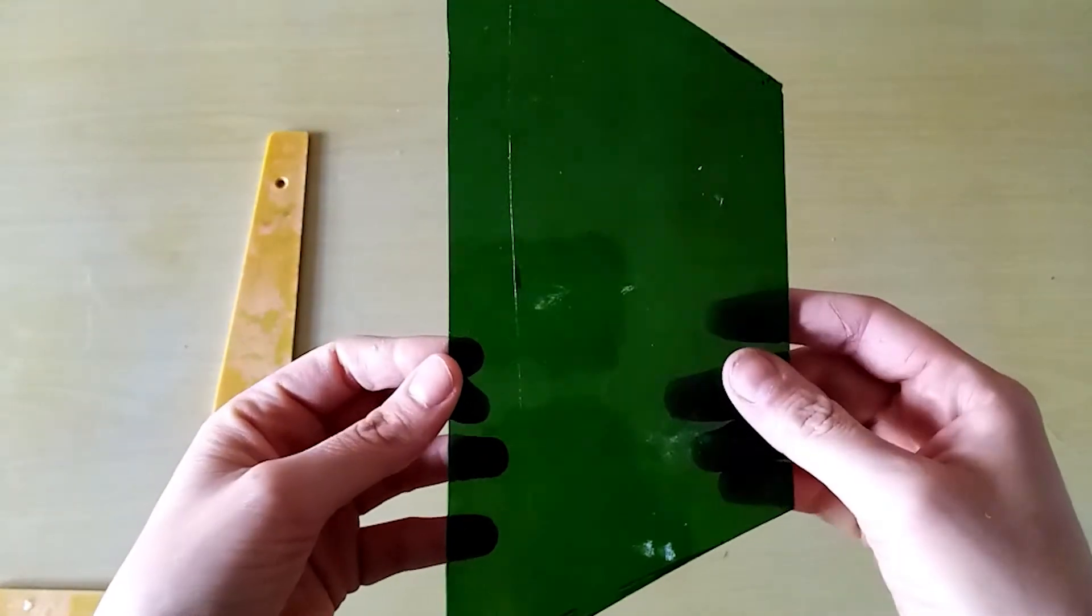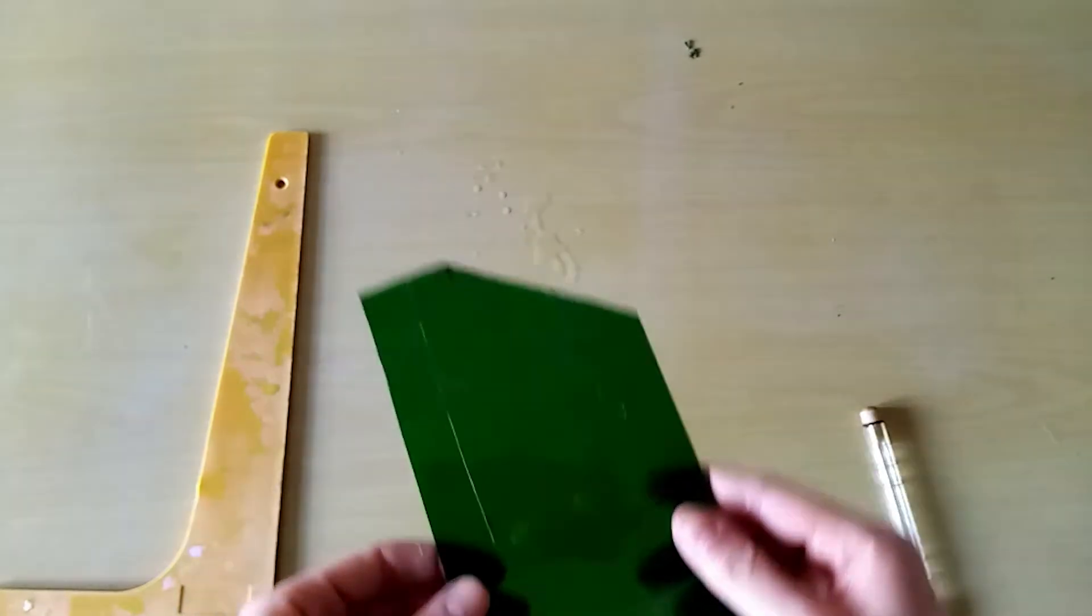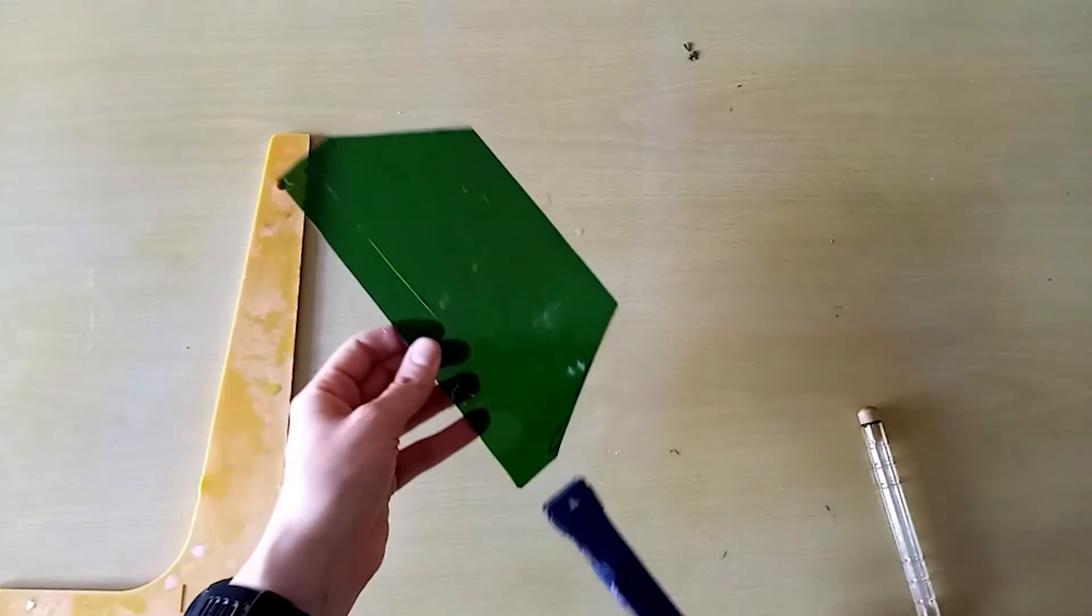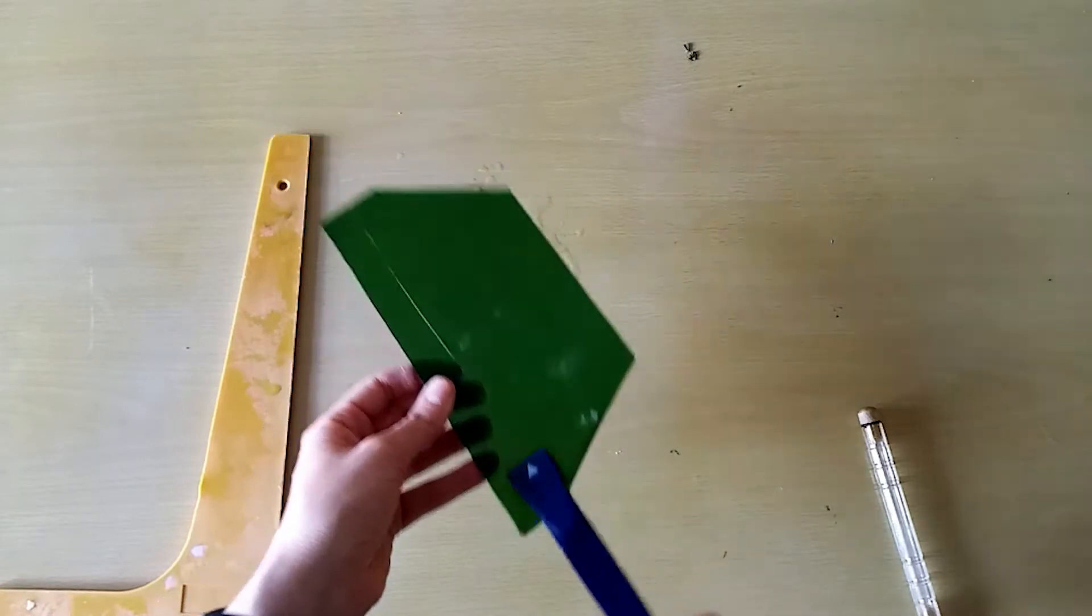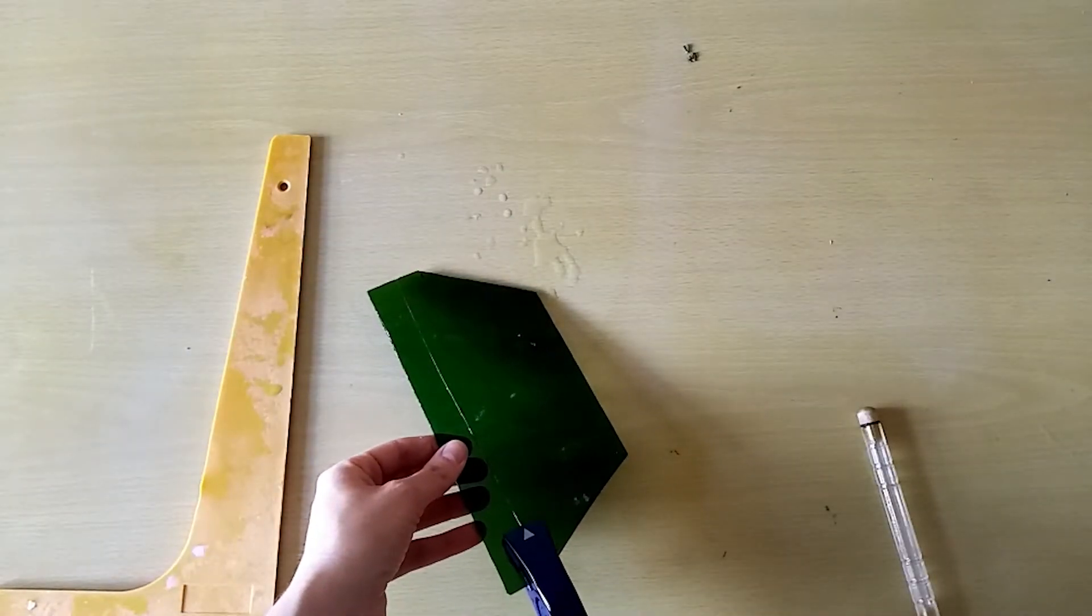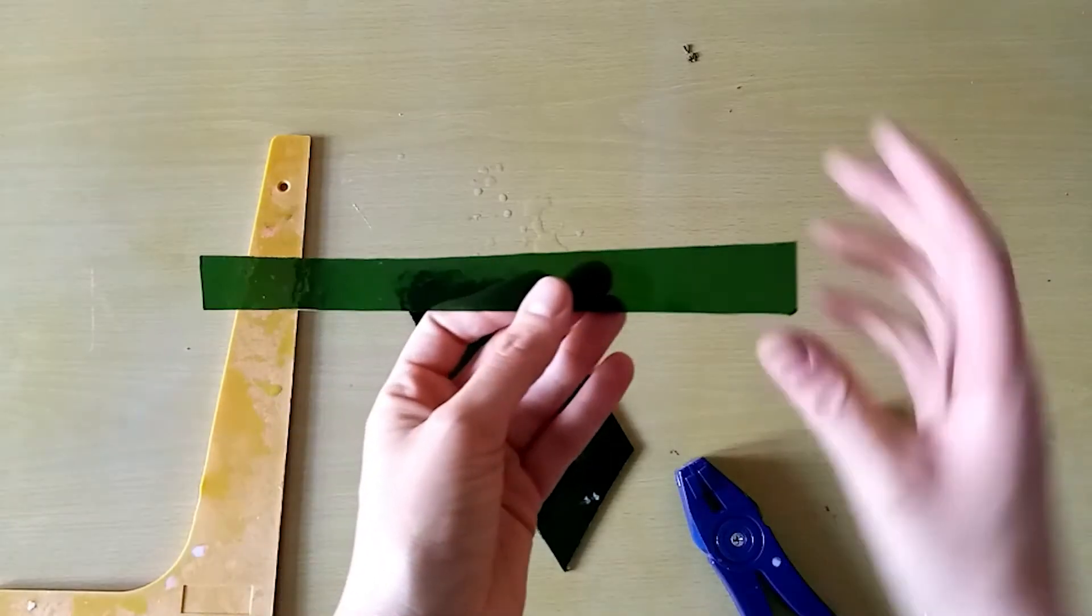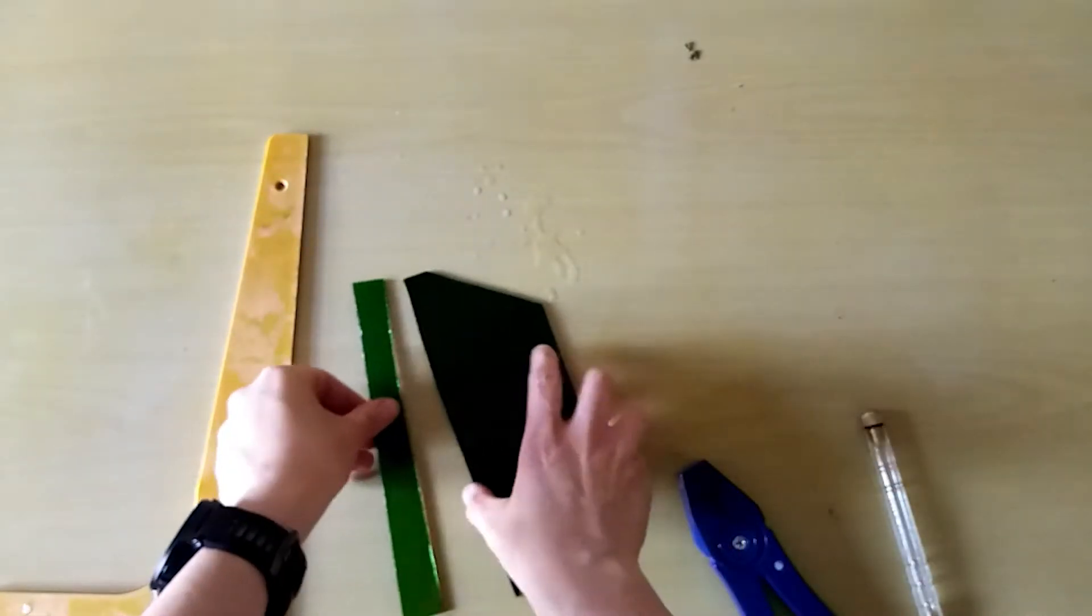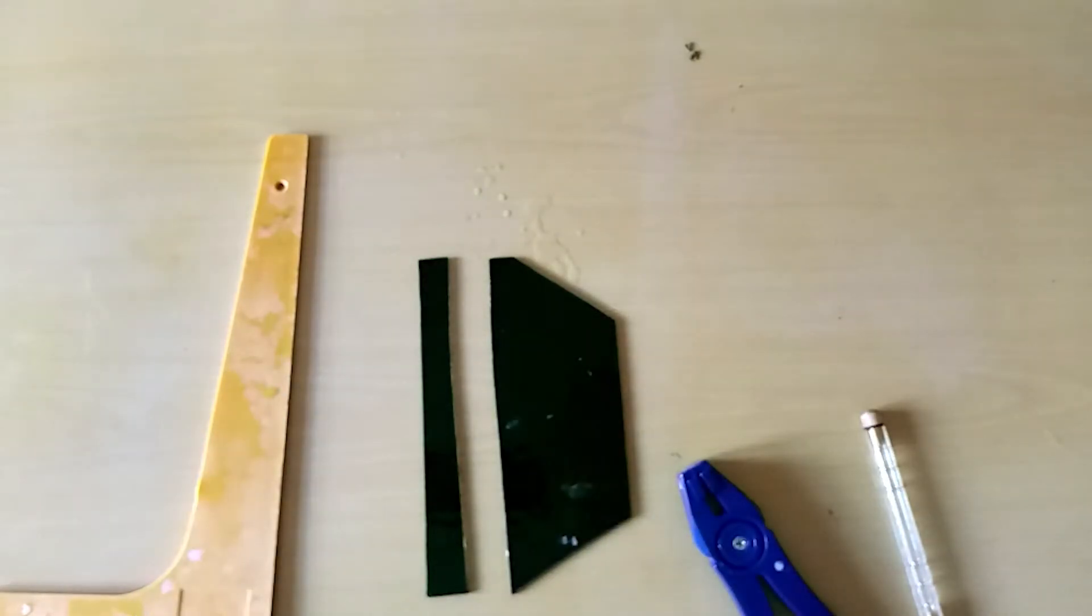Once you've made the score mark all the way down your piece you'll then get your running pliers. So where the arrow is on the top of the running pliers wants to be on the same side as the score mark. Close these firmly and it should score a straight line. This is how you will cut up your glass for lamination.